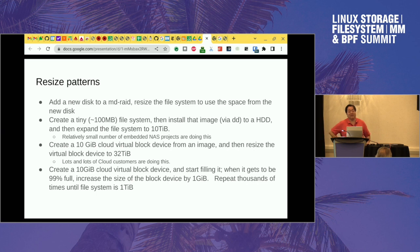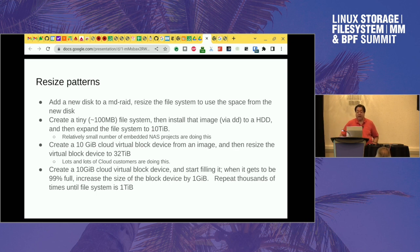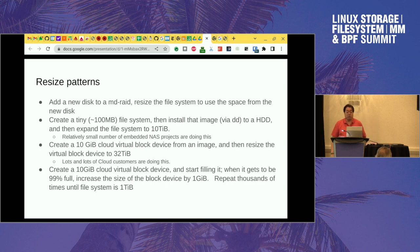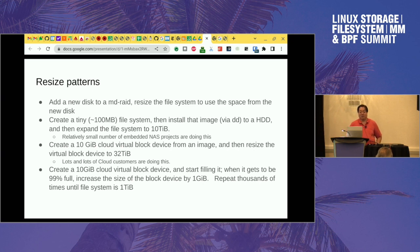That was increasing the size of the file system by a fairly large percentage, starting with a fairly large file system. The other common use case, used mainly by embedded NAS projects, was wanting to use a tiny file system installed on a hard drive using DD, then expanding it to whatever the size of the hard drive was — starting with a 100-megabyte file system and blowing it up to 10 terabytes.